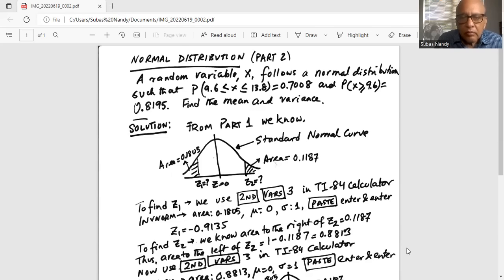Now from earlier we have done the work and we have found out that area to the left of unknown z1 standard normal variable is 0.1805, and area to the right of z2 on standard normal variable unknown is 0.1187.